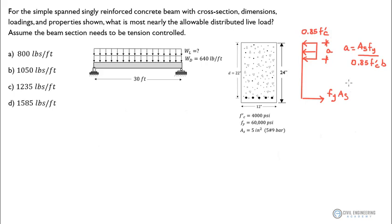We're looking for the most nearly allowable distributed live load, which will induce moments into this beam, so we're analyzing moments and trying to keep them within check. If we take our strength reduction factor times the nominal strength of the beam, we have to keep that greater than or equal to the ultimate moment. This is the LRFD strength design equation that we need to adhere to.